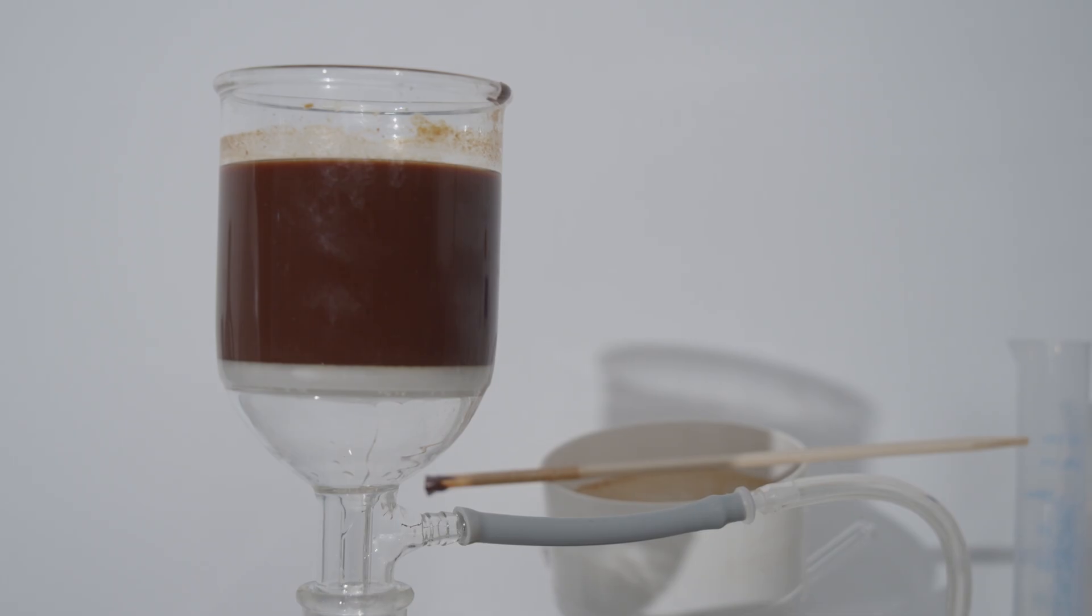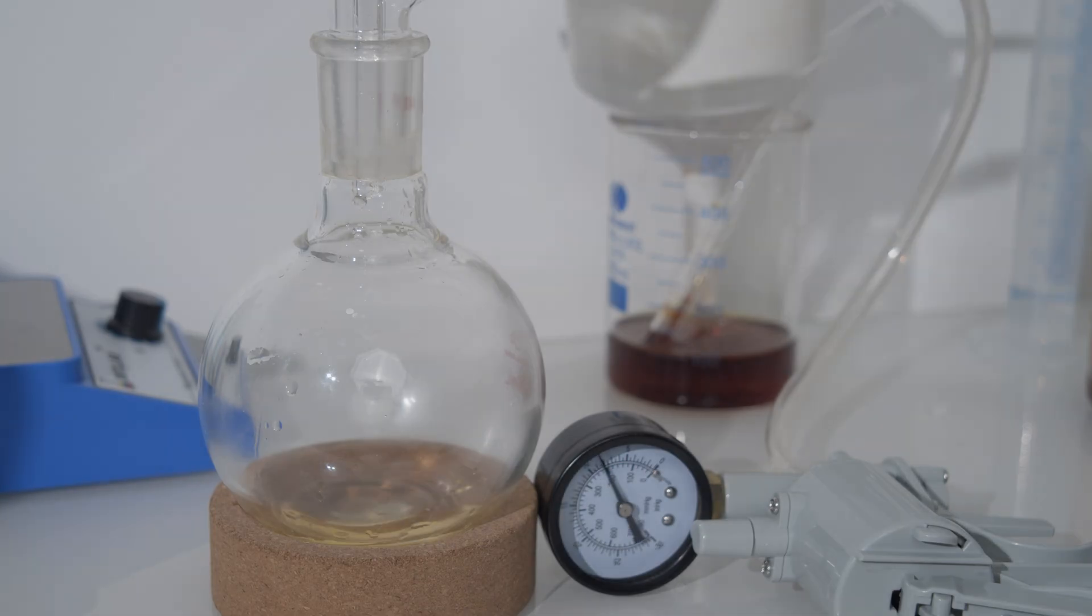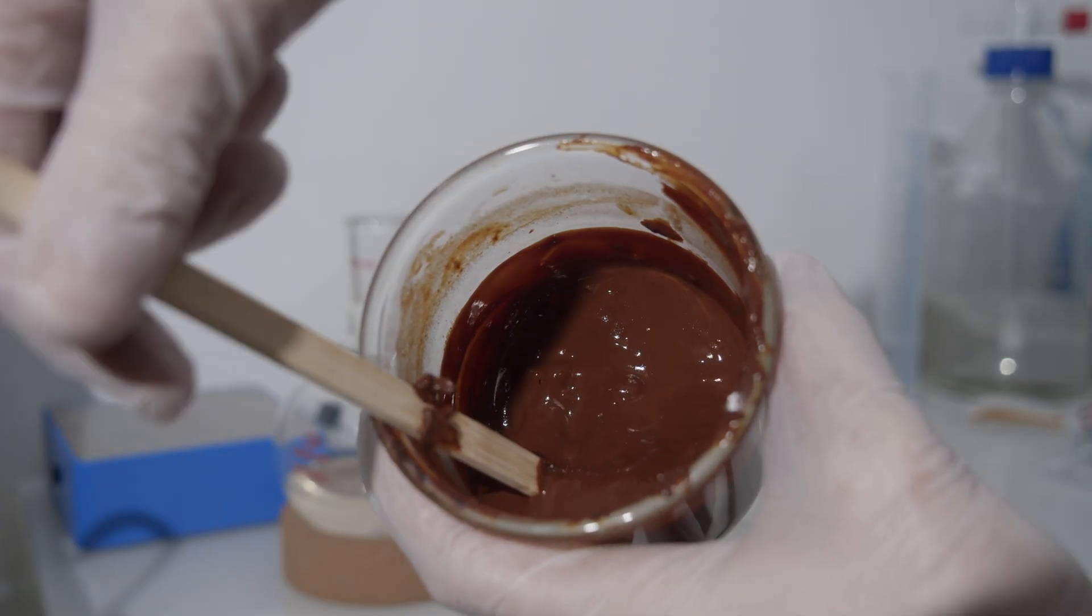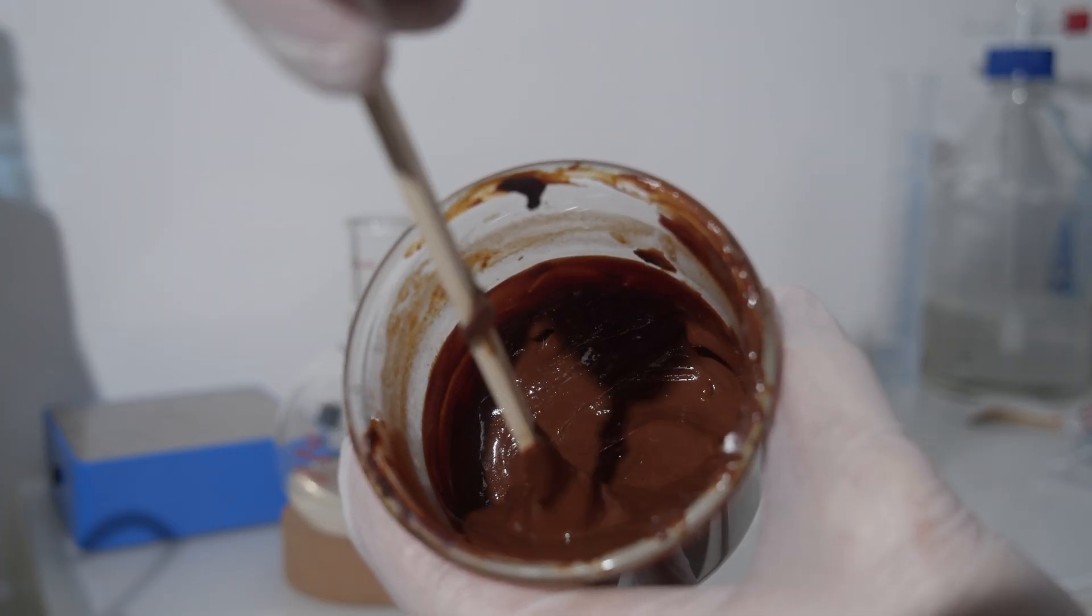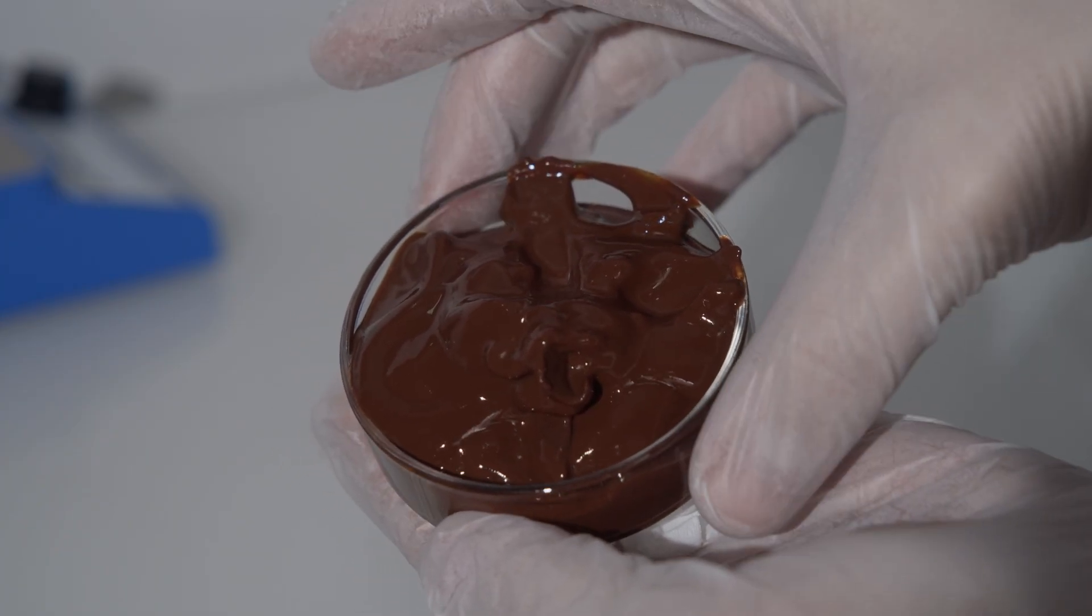The filtration was a disaster. The iron 3 hydroxide was too thick, it completely clogged the filter. Even with vacuum filtration, it took over 3 hours to finish. After filtration, I carefully scooped the thick iron 3 hydroxide sludge and transferred it onto a petri dish for the next step.